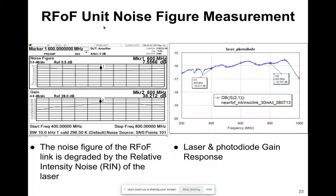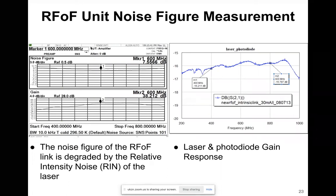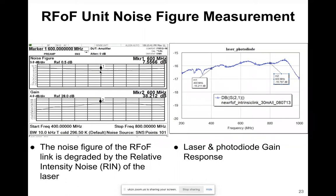I also performed noise figure measurements using our spectrum analyzer. Apologies — the image is not very visible — but at a center frequency of 600 MHz within our band, we have a noise figure of 7.5 dB, which translates to around 1300 Kelvins.